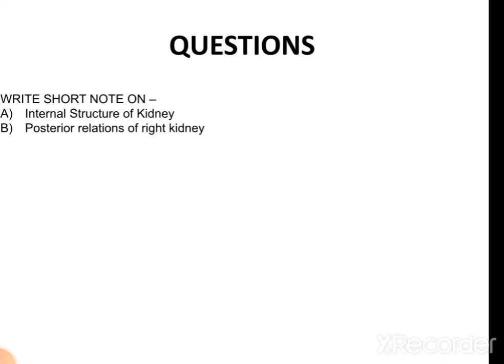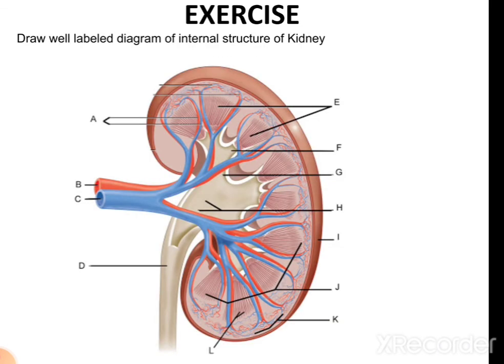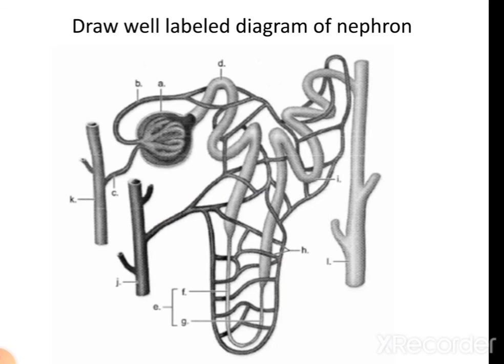Important exam questions include: a short note on the internal structure of the kidney, covering the cortex, medulla, and the structure of the nephron; and the posterior relations of the right or left kidney. For exercises, you must draw well-labeled and colored diagrams of the kidney and the nephron, labeling all structures in your files. This completes our topic on the anatomy of the kidney. Thank you.